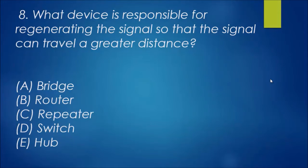We'll start off with number eight. We've got over a thousand questions to answer and hope we can get through a few. Number eight: what device is responsible for regenerating the signal so the signal can travel a greater distance? The answer is C, the repeater. It's a layer one device and that's exactly what it does - it regenerates the signals.